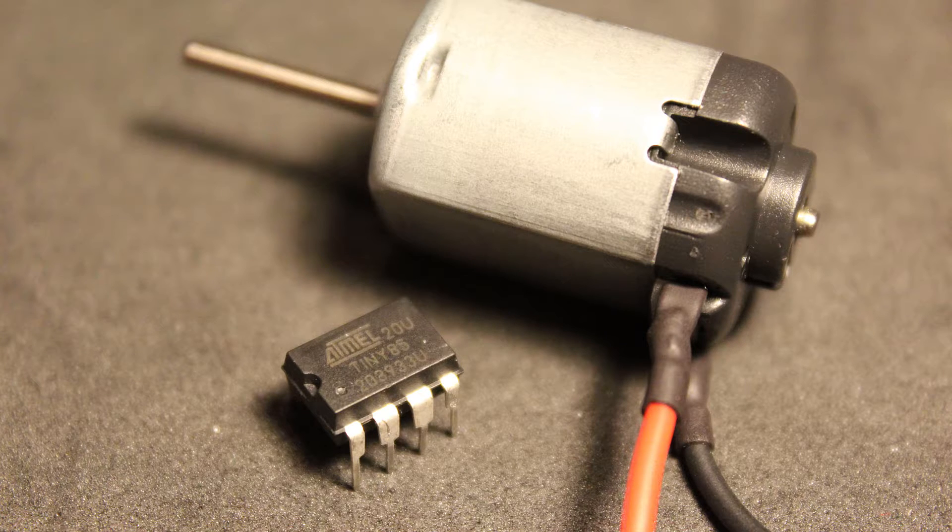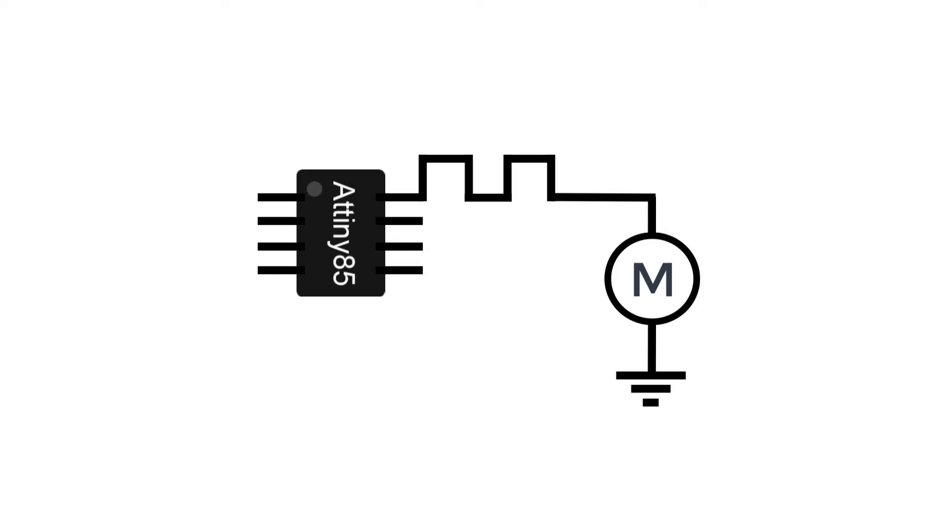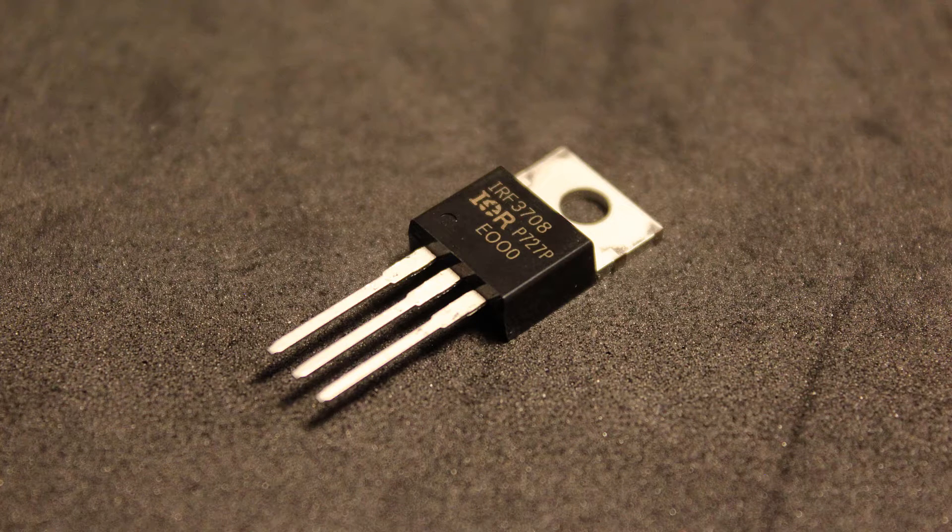You may think that we can just connect the DC motor directly to the ATtiny85 for the PWM signal. However, we cannot do this because the motor draws way too much current than what the microcontroller can handle, which will destroy it. To overcome this issue we need to use a MOSFET.